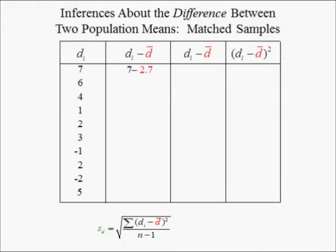The first deviation from the mean differences in delivery times is 7 minus 2.7, or 4.3 hours. The first squared deviation from the mean differences in delivery times is 18.49 hours squared. The second deviation from the mean differences in delivery times is 6 minus 2.7, or 3.3 hours. The second squared deviation from the mean differences in delivery times is 10.89 hours squared.